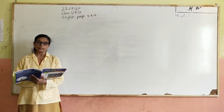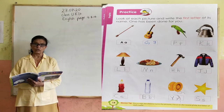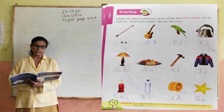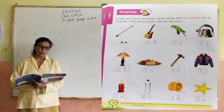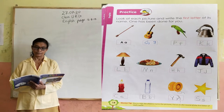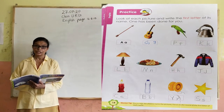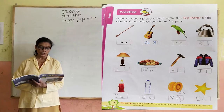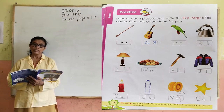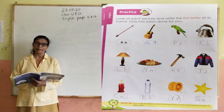First letter is A. The first letter of A is A. It is done in your book. Second picture is Guitar. First letter of Guitar is G.